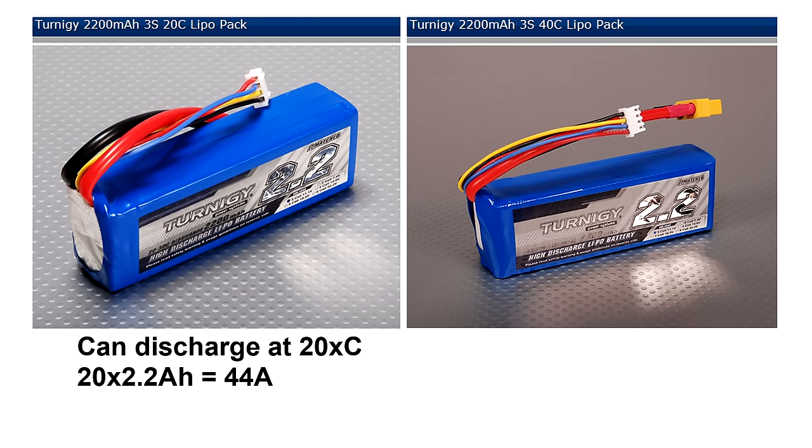So this 20C battery can deliver 20 times C or 20 times 2.2 amp hours. So this battery can safely deliver up to 44 amps. And this 40C battery can safely deliver 88 amps.